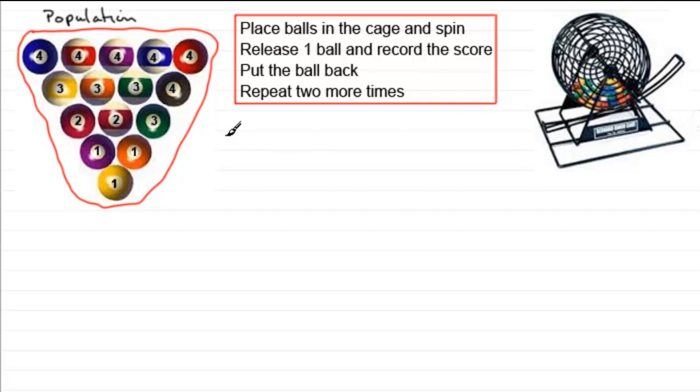Now if we were to say, let X be the random variable, we'll just write it as RV for short. Let X be the random variable, and we'll say that it's the score on a ball that we take out.